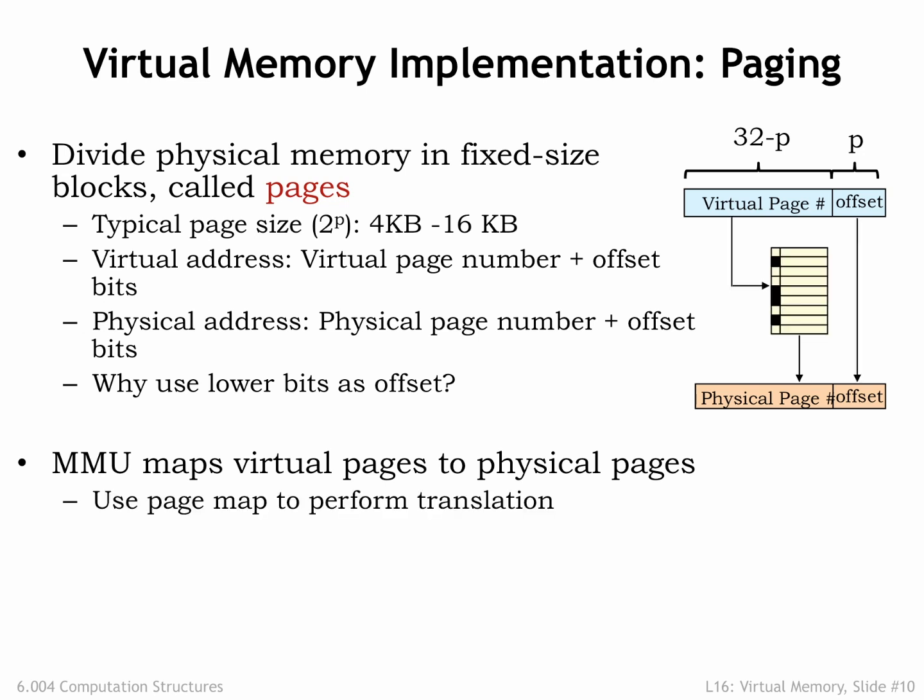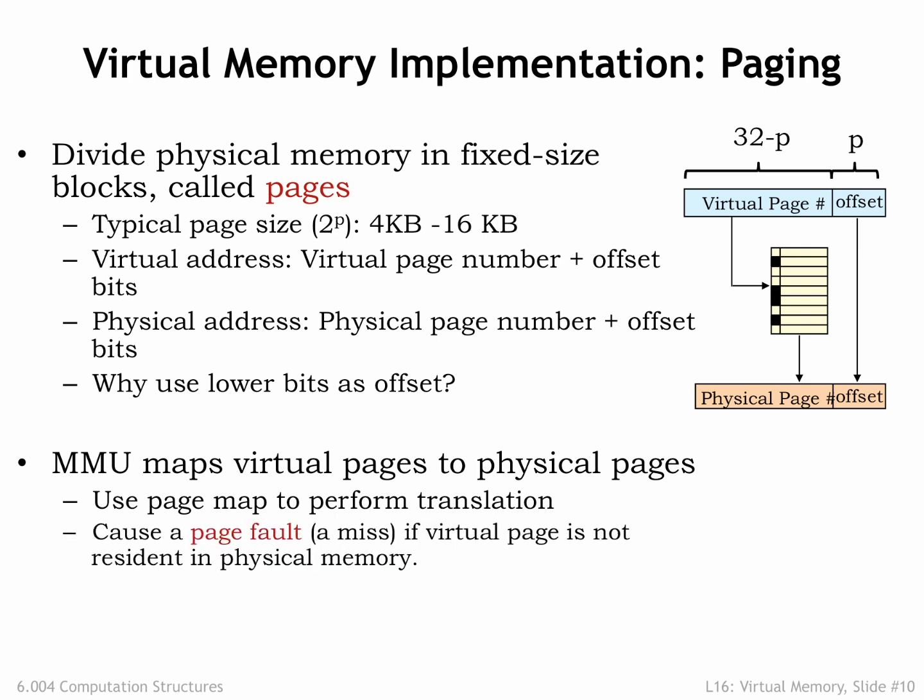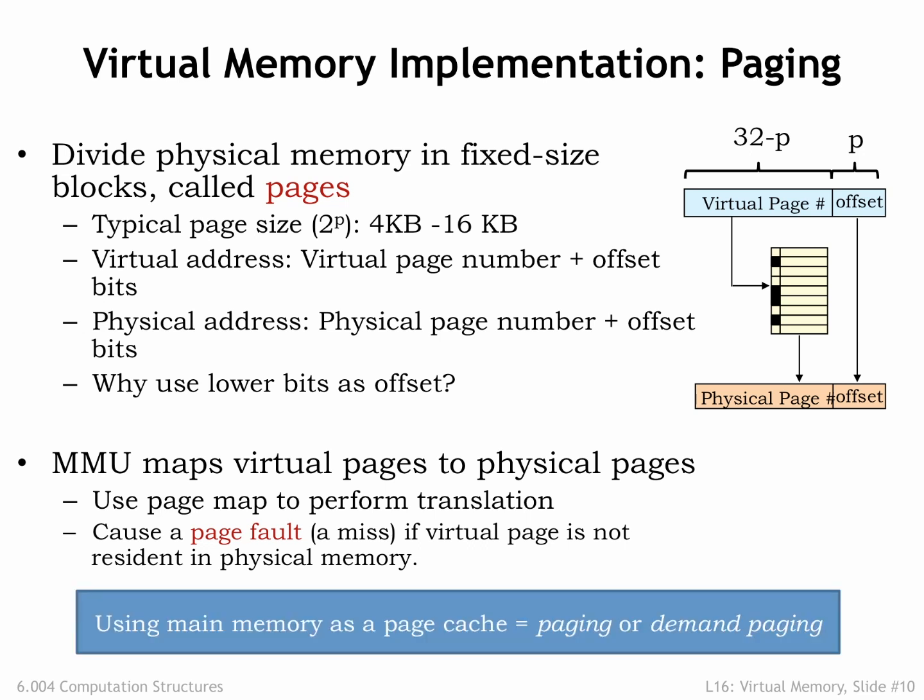The MMU will map virtual page numbers to physical page numbers. It does this by using the virtual page number as an index into the page table. Each entry in the page table indicates if the page is resident in main memory and, if it is, provides the appropriate physical page number. The physical page number is combined with a page offset to form the physical address for main memory. If the requested virtual page is not resident in main memory, the MMU signals a memory management exception called a page fault, so the CPU can load the appropriate page from secondary storage and set up the appropriate mapping in the MMU. Our plan to use main memory as a page cache is called paging, or sometimes demand paging, since movements of pages to and from secondary storage is determined by the demands of the program.